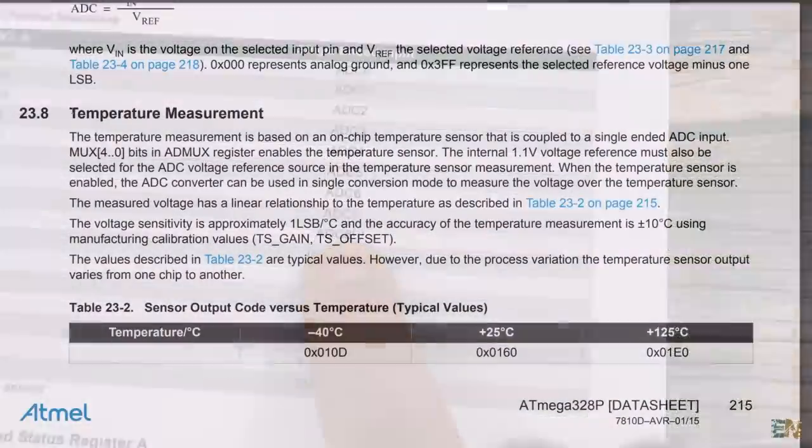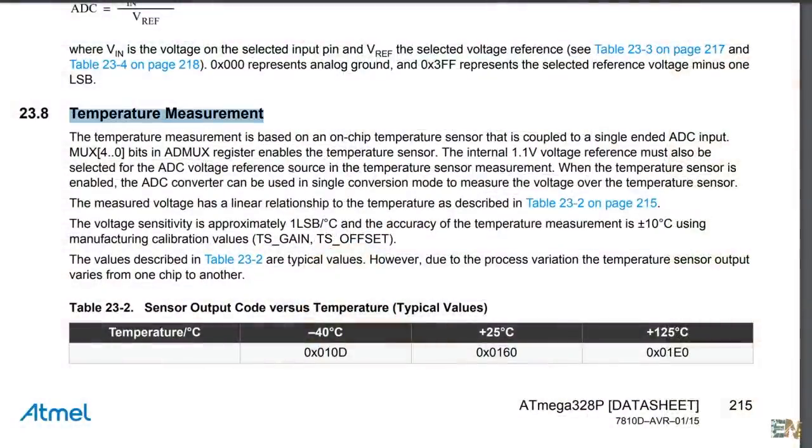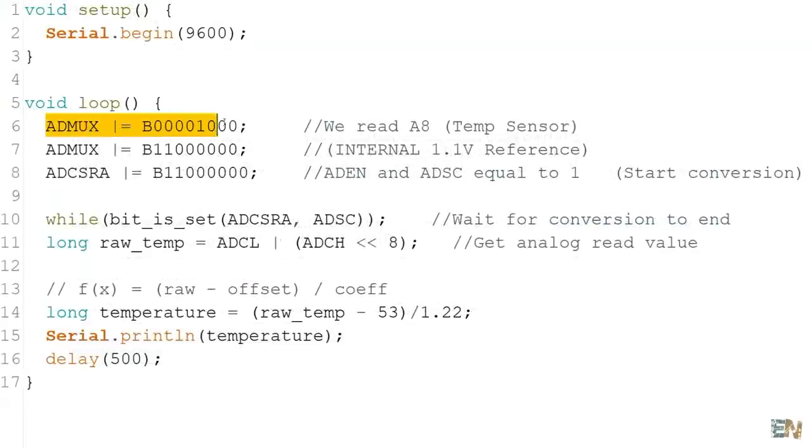The sensitivity of this sensor is approximately 1mV per Celsius degree and this is a quite bad sensor with an accuracy of plus minus 10 degrees. But anyway, we make this code and we set the ADMAX or equal to 00001000 so now the sensor is connected to the ADC.